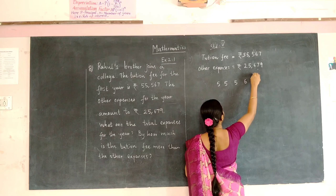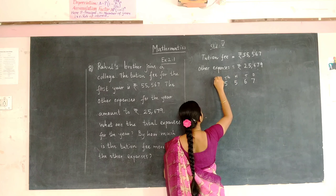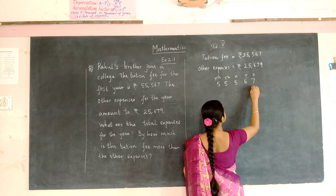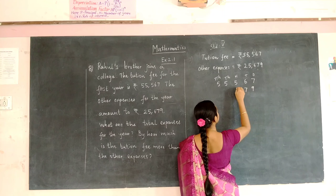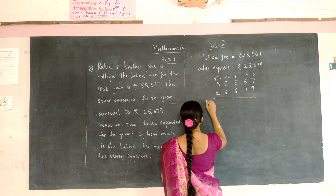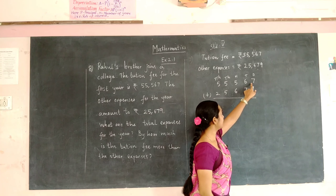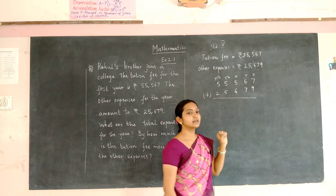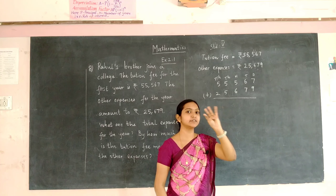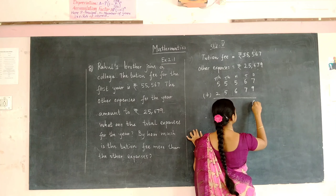We are going to find total expenses — total expenses means we have to add tuition fees and other expenses. Write the number with the place value: 1s, 10s, 100s, 1000, 10,000. Write the second number starting from the right: 9, 7, 6, 5 and 2. Total expenses means you have to add the two numbers. Add 7 and 9: counting from 7 gives 8, 9, 10, 11, 12, 13, 14, 15, 16 — so the answer is 16.